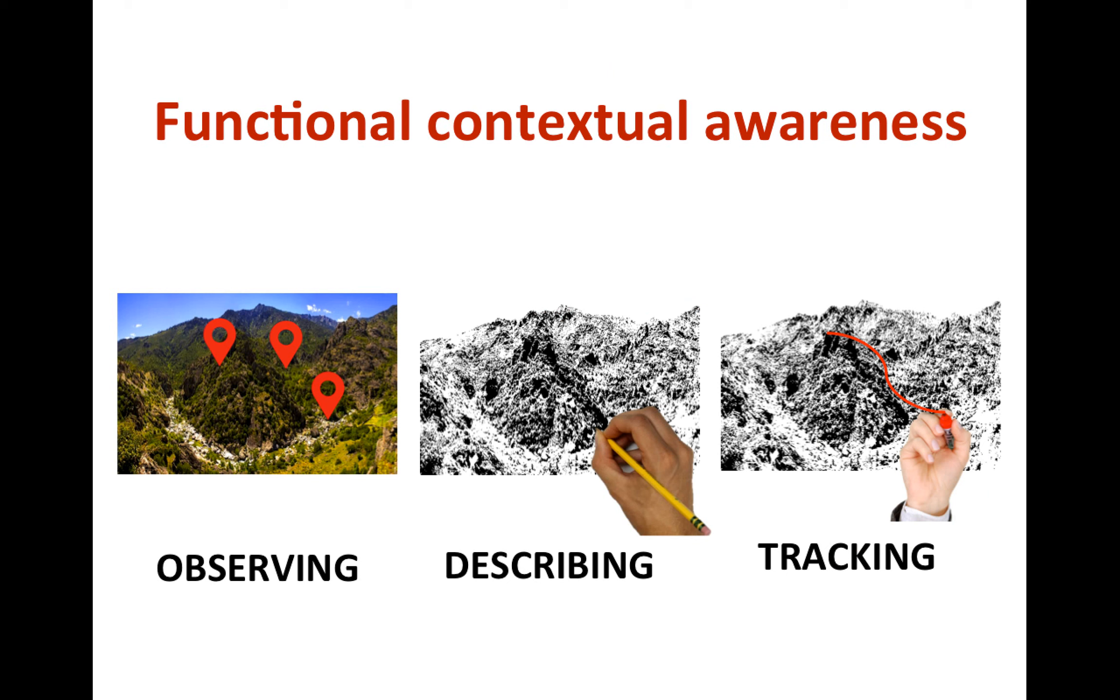I'll start with summarizing the first two components we covered in the past two sections. First, we saw that to help clients make the changes they need to live a more satisfying life, we need to help them improve their awareness of their own actions and the contextual variables that influence these actions. We saw that this process can be broken down into three main skills: observation, description and tracking.